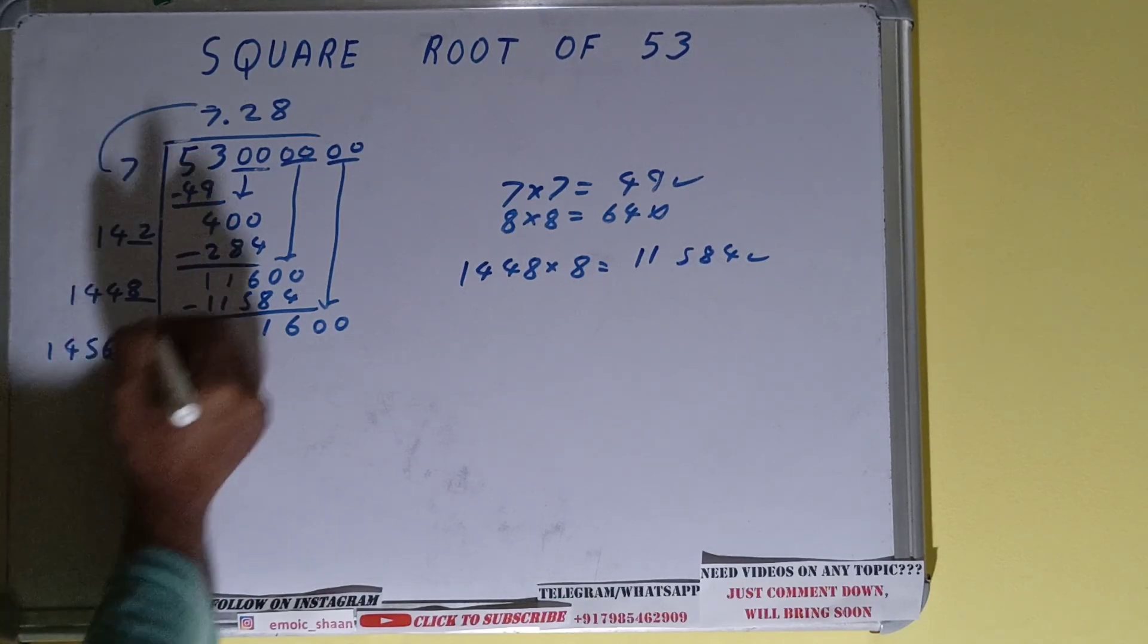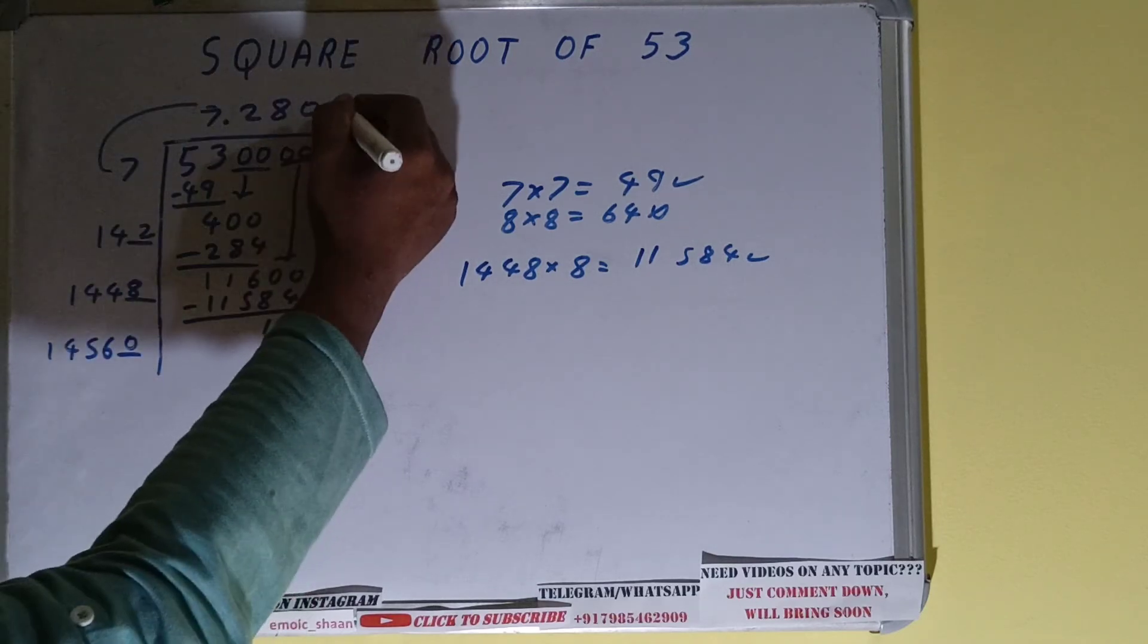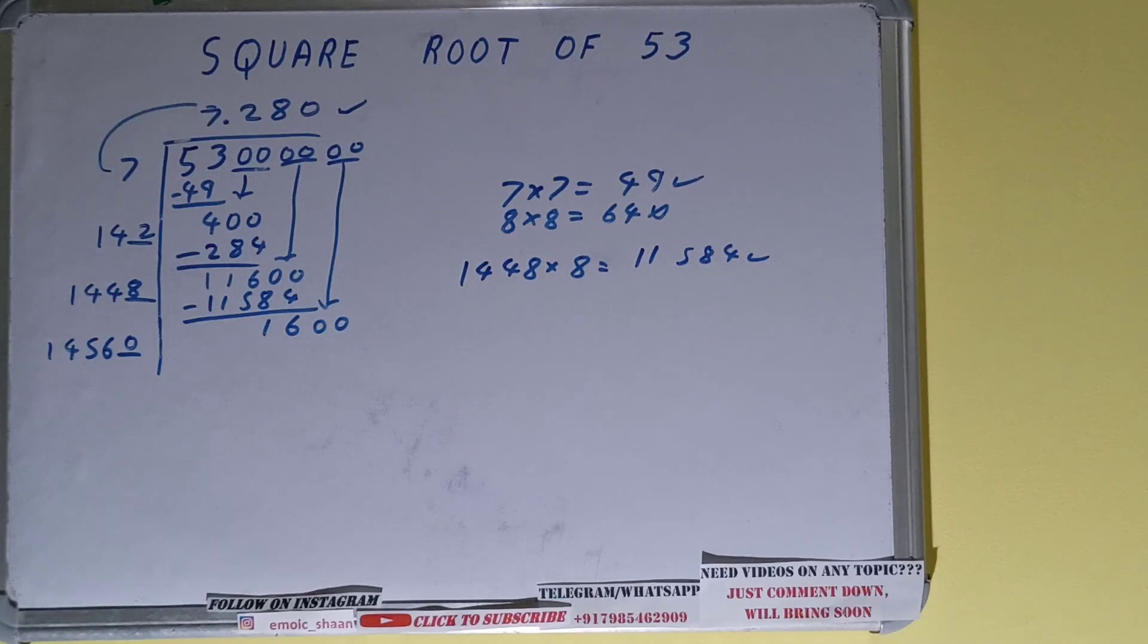Now you can see this 1,600 is much more smaller than this five-digit number, so we have no choice but to take zero. Okay, but we don't need to calculate the answer. Why? So because we already calculated our answer correct up to three decimal places, so our work is done here.